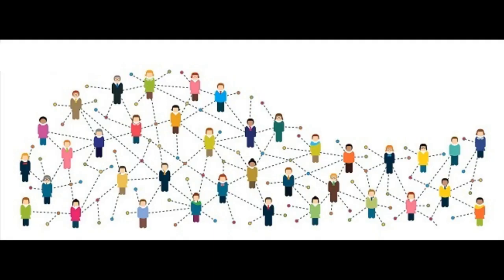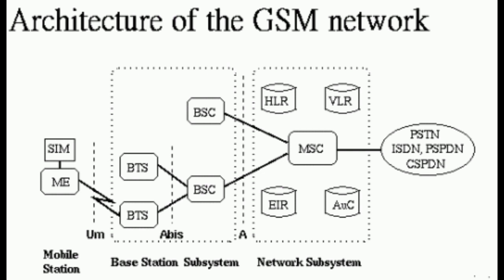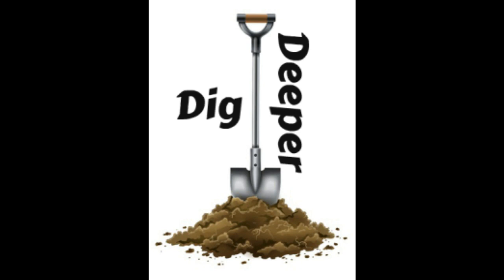Basically, there are three sections of the GSM architecture: the Mobile Station, the Base Station Subsystem, and the Network Switching Subsystem. Before we dig deeper, let's understand what a cell and a radio channel are.